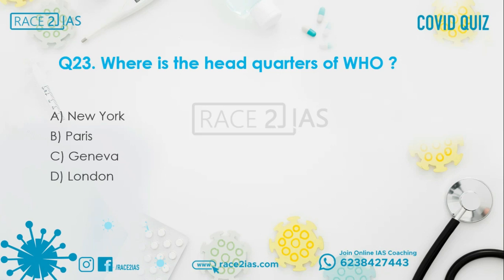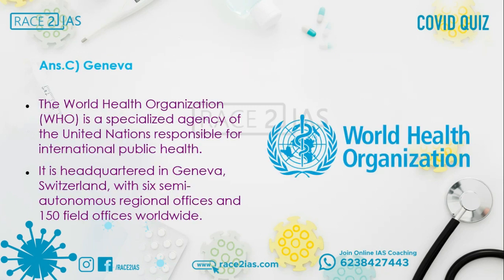Question number 23: Where is the headquarters of WHO? Option A: New York. Option B: Paris. Option C: Geneva. Option D: London. The right answer is Option C, Geneva. The World Health Organization is a specialized agency of the United Nations responsible for international public health. It is headquartered in Geneva, Switzerland, with 6 semi-autonomous regional offices and 150 field offices worldwide.